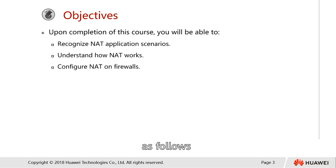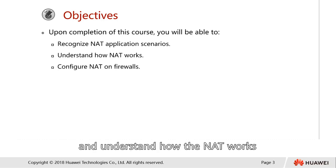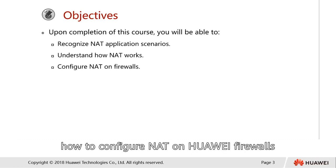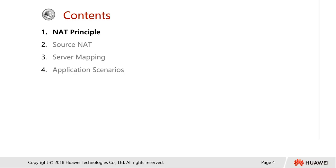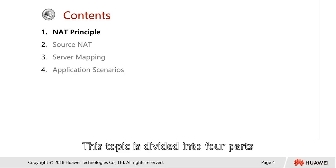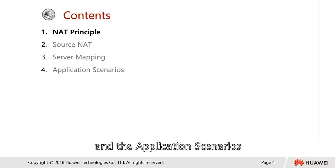Our objectives for this topic are as follows. Firstly, we will be able to recognize NAT application scenarios and understand how NAT works, as well as how to configure NAT on a Huawei firewall. This topic is divided into four parts: the NAT principle, source NAT, server mapping, and finally the application scenario.